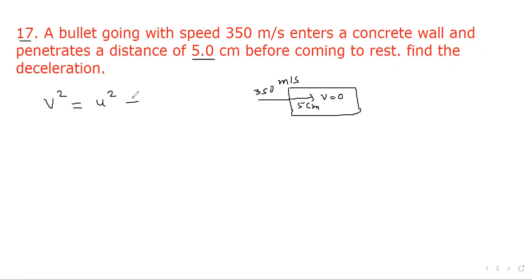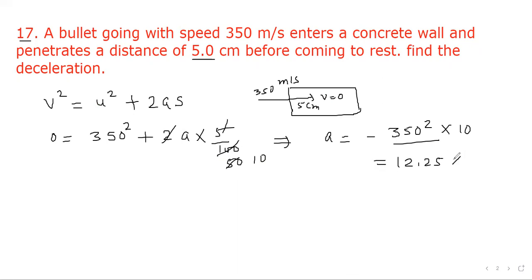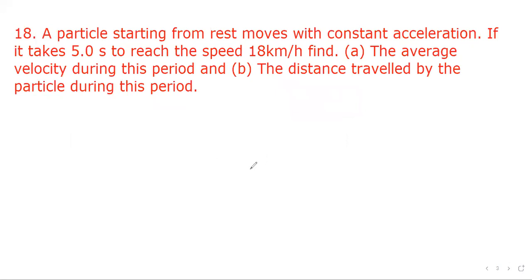We apply v² = u² + 2as: 0 = 350² + 2 × a × (5/100). Simplifying, a = −350² / (2 × 0.05). After cancellation this gives a = −12.25 × 10⁵ meter per second square.